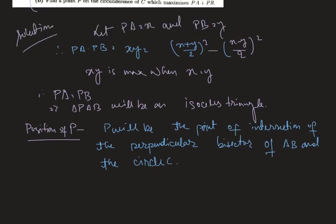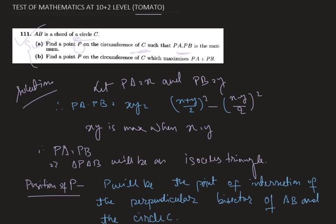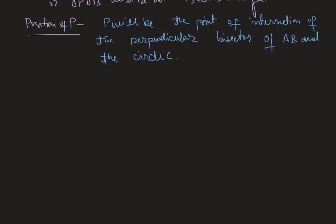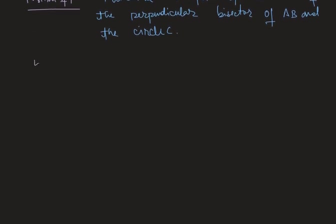Now let's see what is in the next part, which is Part B. Find the point P on the circumference of C which maximizes PA plus PB. Therefore we need to find a point P on the circumference of C which maximizes PA plus PB.